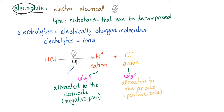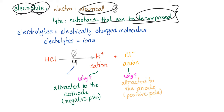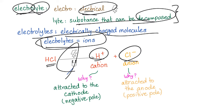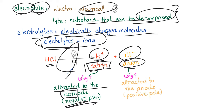What is an electrolyte? 'Electro' means electrical, 'lyte' means a substance that gets decomposed — so an electrolyte is decomposed by electricity. Electrolytes are electrically charged molecules — in short, electrolytes are the same as ions. For example, hydrochloric acid given electricity dissociates into protons and chloride. We call the positive ion a cation because it's attracted to the cathode (negative pole), and the negative ion an anion because it's attracted to the anode (positive pole).